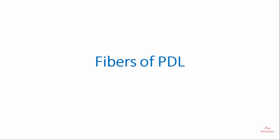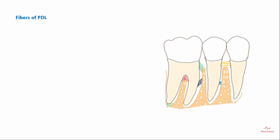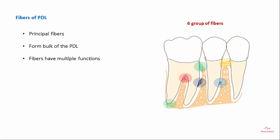Fibers of the periodontal ligament are called principal fibers and are arranged in six groups. These form the bulk of the periodontal ligament and perform multiple functions like shock absorption, nutrition, sensory, and formation.